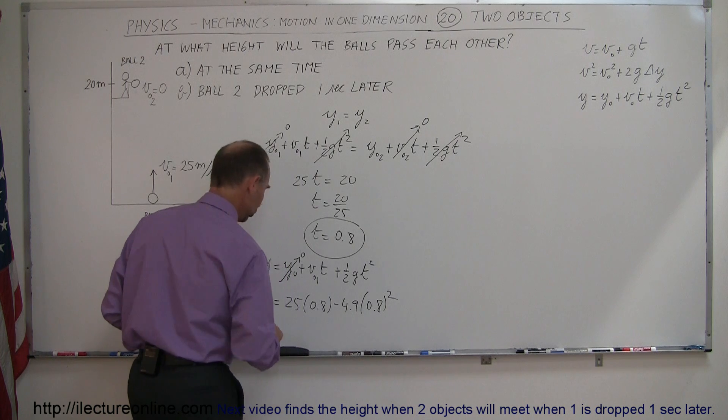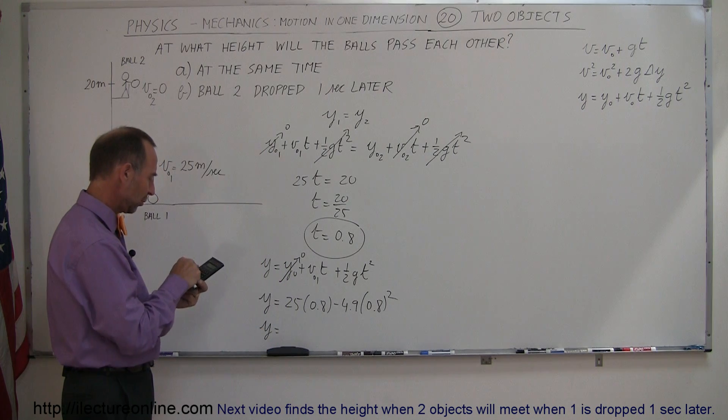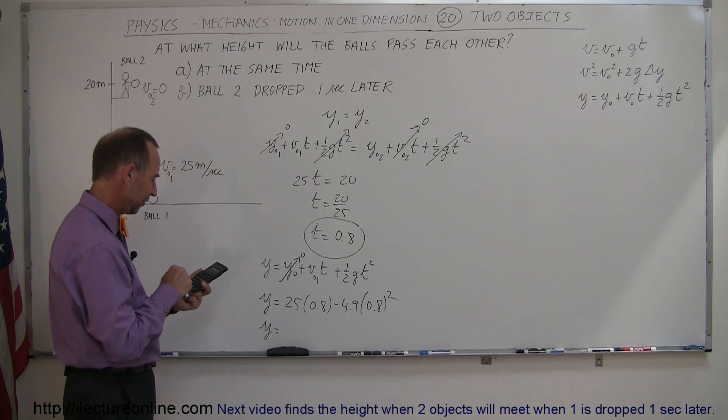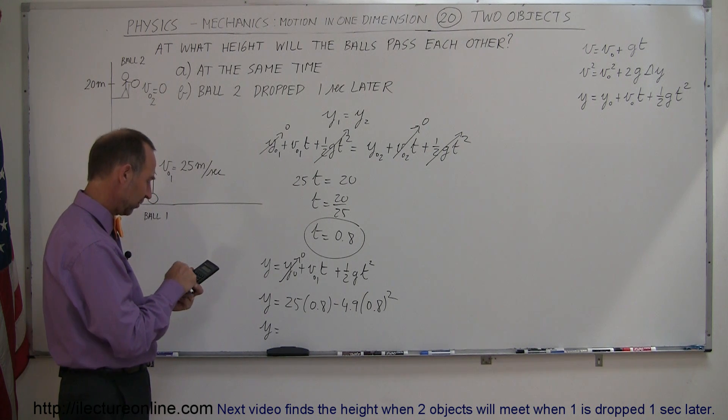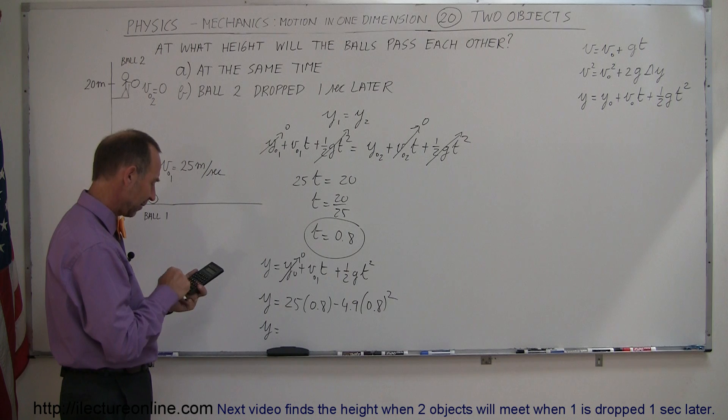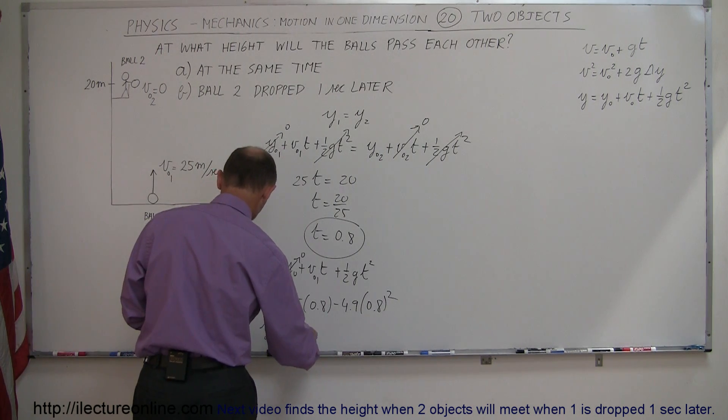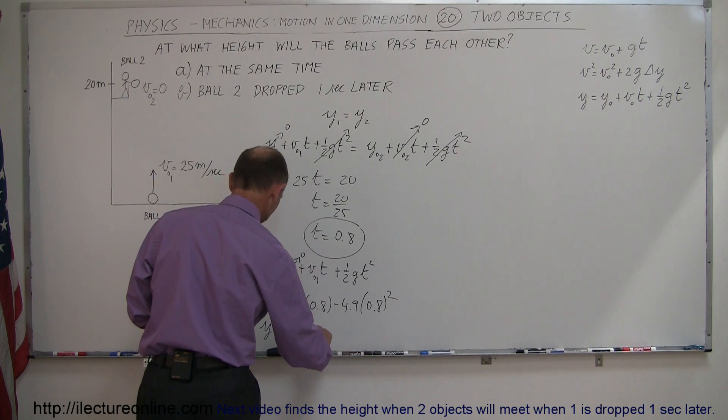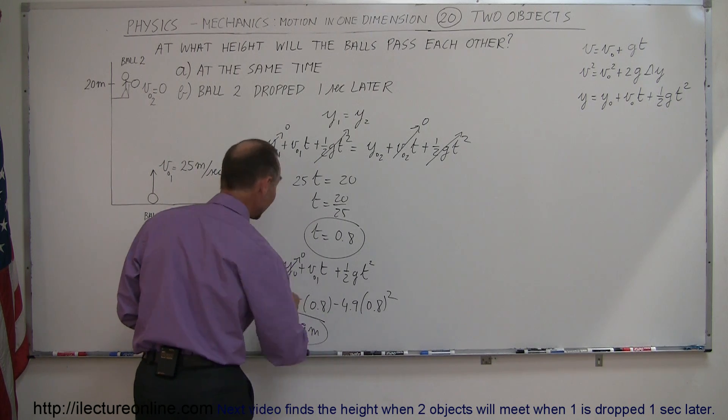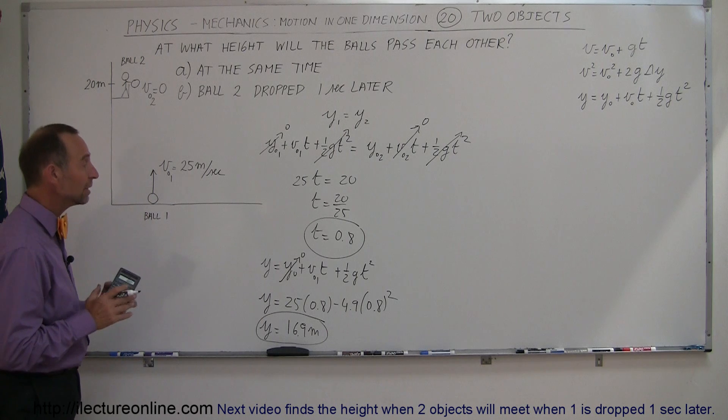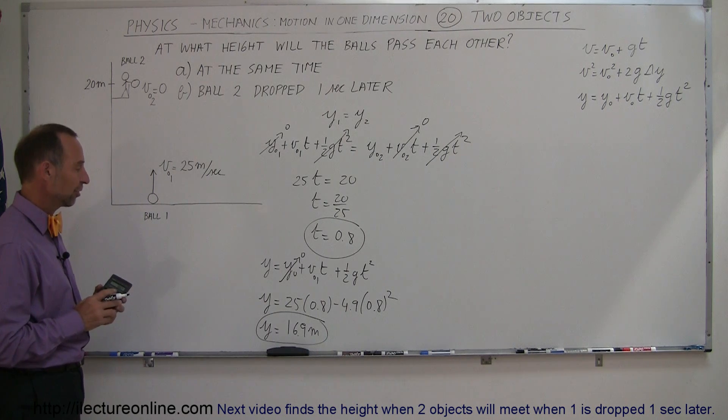So, we have y is equal to, so we have 0.8 squared times 4.9, make that negative, and we add to that, plus the quantity 25 times 0.8, which of course is 20, equals, and so that will happen at a height of 16.9 meters. So, that's the height at which both balls will meet each other for the first time.